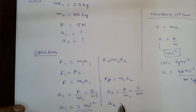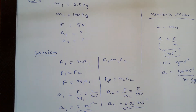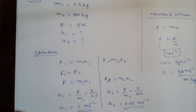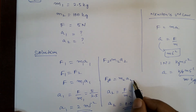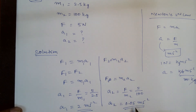And what is A2? A2 is equal to 5 divided by 100, which equals 0.05 meter per second squared. Now, listen clearly: for the 2.5 kg mass, acceleration is 2 m/s², whereas for the 100 kg mass, it is much less. Are you able to understand this point?